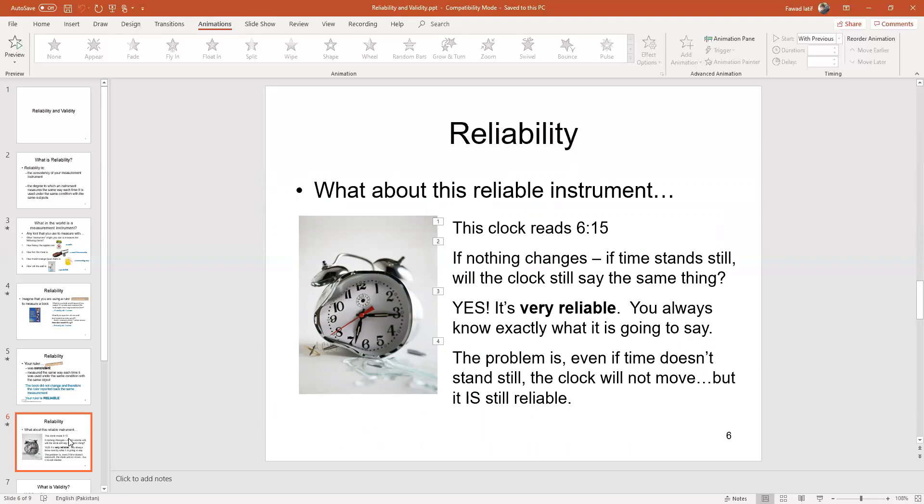Another example could be a weighing machine. You are standing on the weighing machine and it weighs 80 kg. What if your son stands on it - he's six years old - so it gives the same 80 kg?